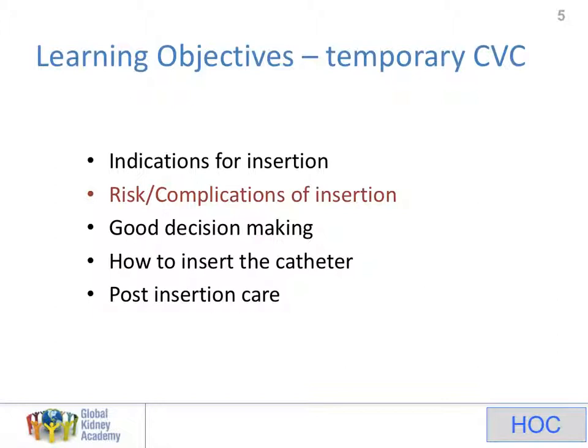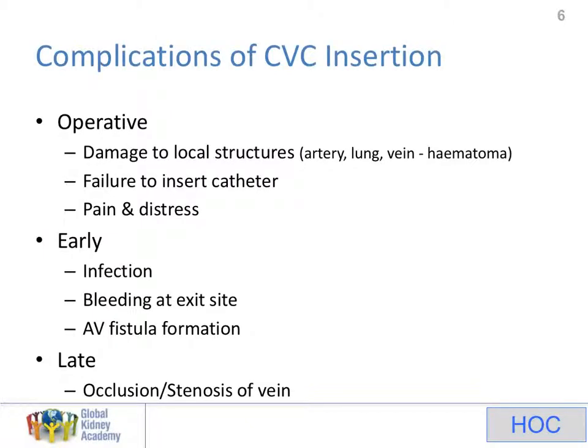Let's move on to the risks and complications of insertion. If I got you to think about what complications you would come up with, most likely you would think of the first one in each category. The operative complications include damage to local structures — you would think about puncture of an artery, lung, or vein. But the second on the list you might not think of as a complication but is really quite important: failure to insert a catheter is very much a complication, because if there was a good indication and it hasn't been inserted because you failed, that obviously has serious consequences.